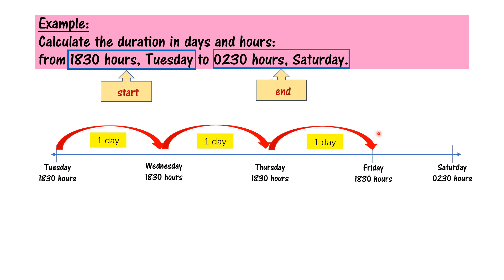Now, tengok end time kita nak Saturday. Thursday belum sampai lagi, so another one day — from Thursday to Friday. Now, if one more day, Friday akan jadi Saturday and the time would be 18.30. But 18.30 is already more than 00.30 — sudah lebih. So can I write one day here? Cannot, because already more than 00.30.